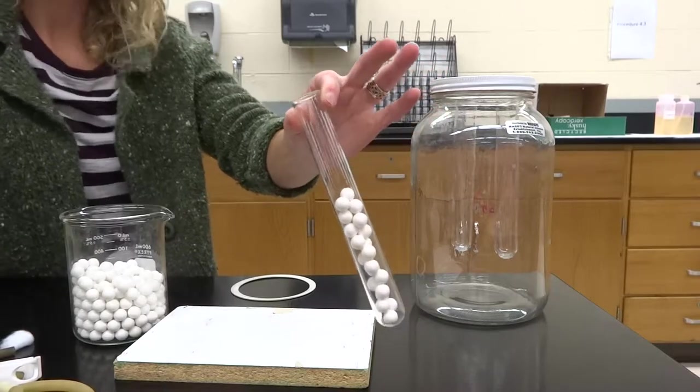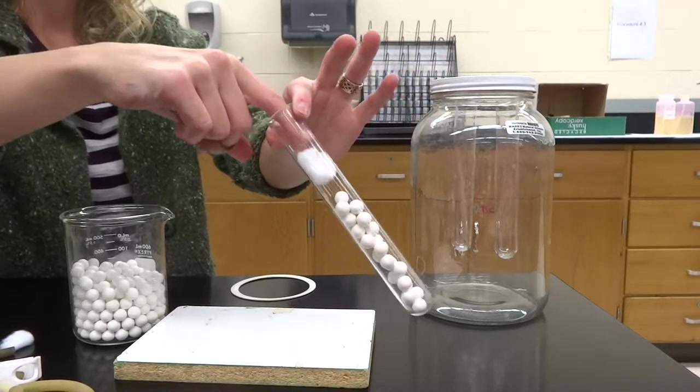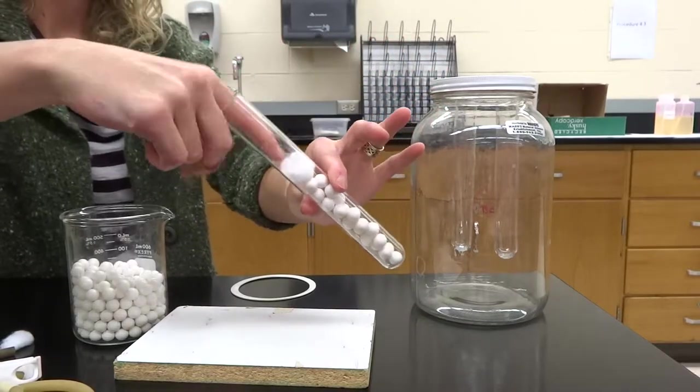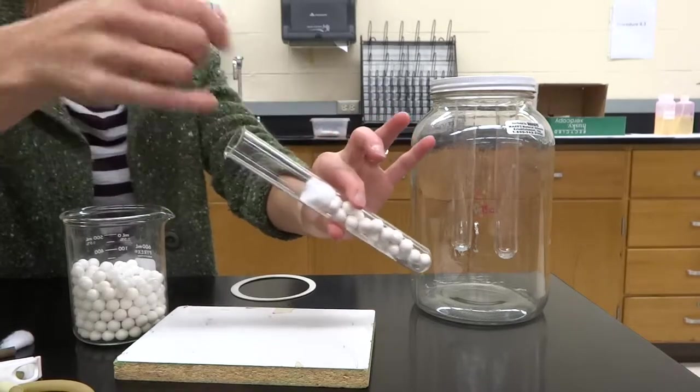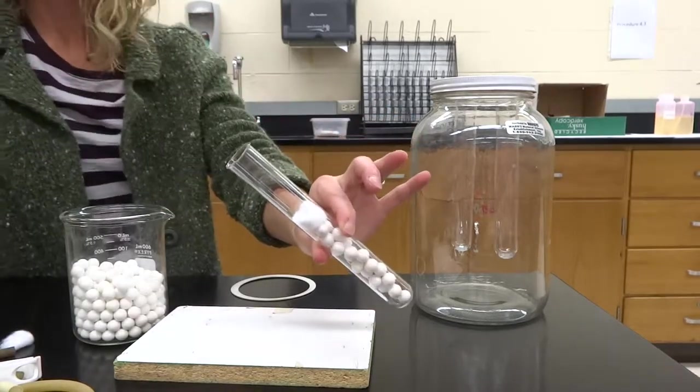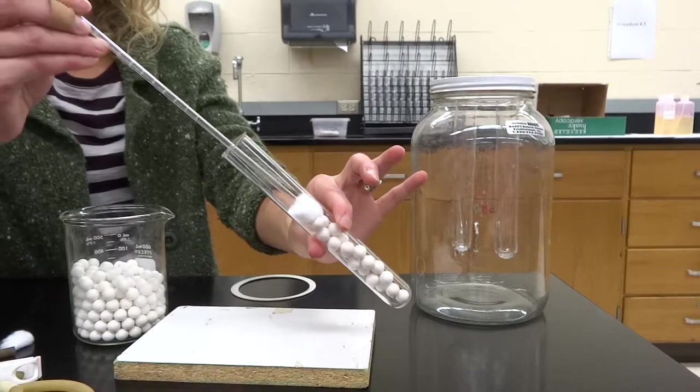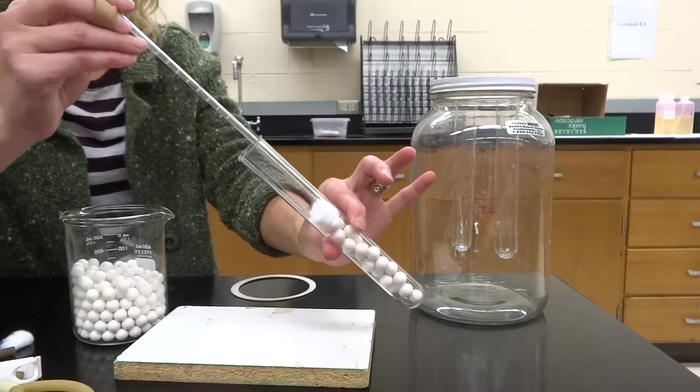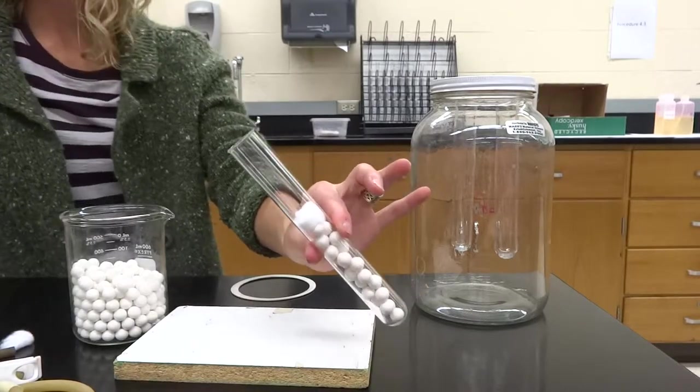When you make these tubes for the peas and the beads, you're going to put in a huge chunk of cotton. Make sure that your cotton is about the same size in all three of your tubes as well.